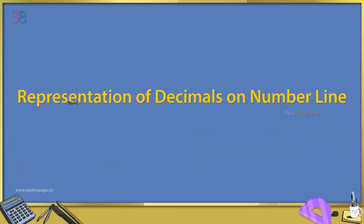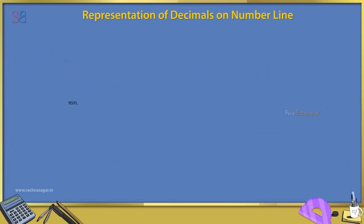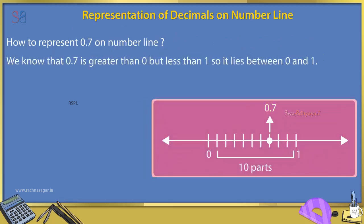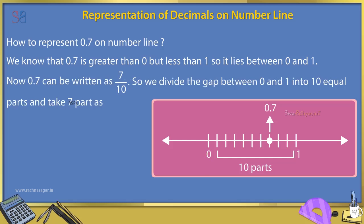Representation of decimals on number line: How to represent 0.7 on a number line? We know that 0.7 is greater than 0 but less than 1, so it lies between 0 and 1. Now, 0.7 can be written as 7/10. So we divide the gap between 0 and 1 into 10 equal parts and take 7 parts to represent 0.7, as shown in the figure.